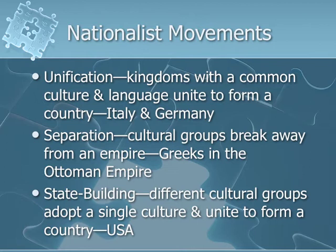In the 19th century there are three different types of nationalist movements. First, you have unification — that is where kingdoms or areas with a common culture and language unite to form a country. The best examples of this are Italy and Germany.